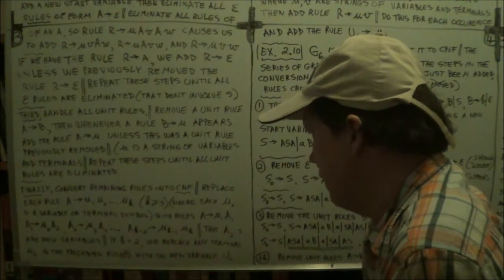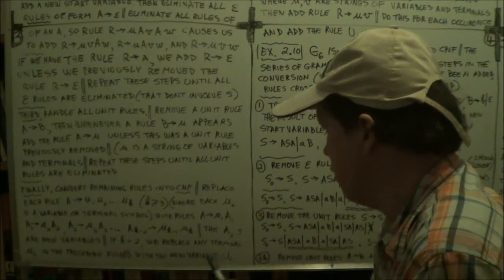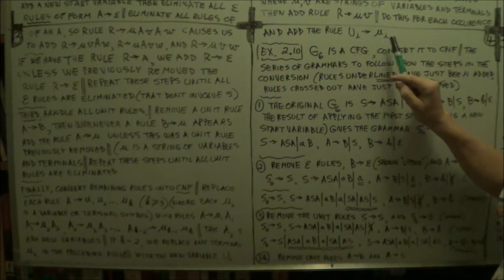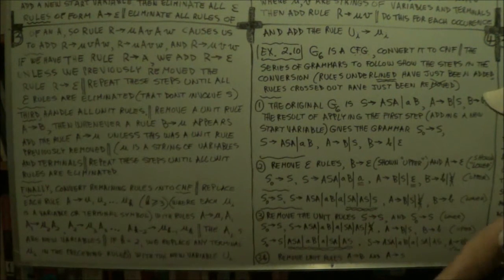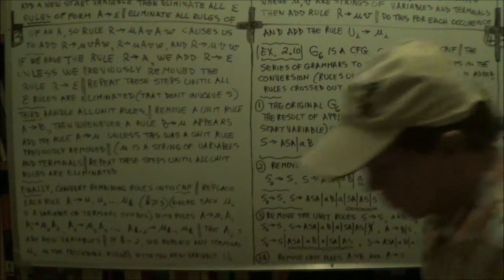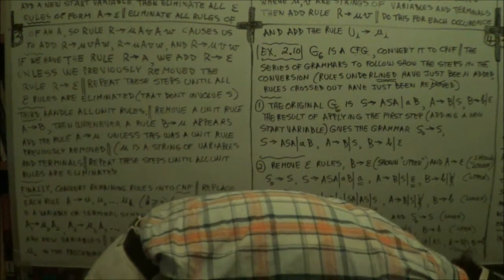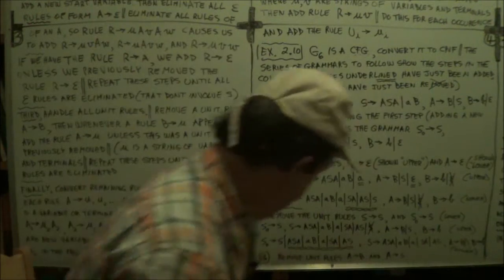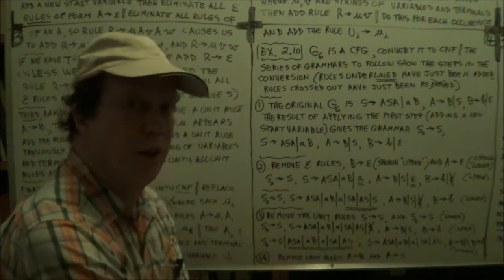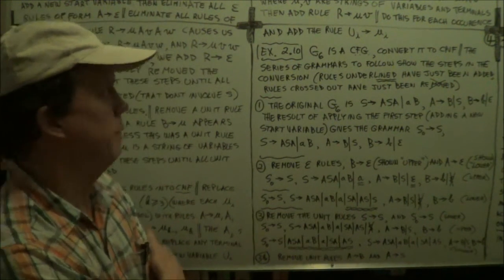Now, if k is 2, a bit of a special case, if k is 2, we create a new variable ui and add the rule that ui is little ui. Alright, well now I'll switch around. Now let's actually do an example.